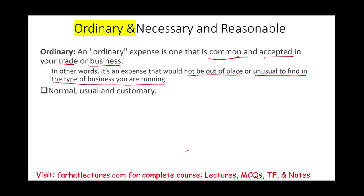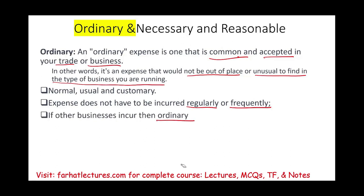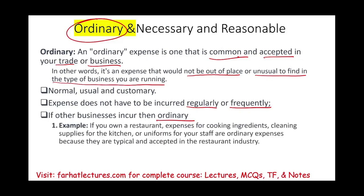Simply put, it's normal, usual, and customary. The expense that you incur does not have to be incurred on a regular basis or frequently — as long as it's normal, usual, and acceptable for your type of business. If other businesses also incur the same type of expense, then it's considered ordinary. For example, if you own a restaurant, expenses for cooking ingredients, cleaning supplies for the kitchen, and uniforms for your staff are ordinary expenses because they are typical and accepted in the restaurant industry.